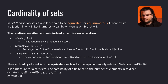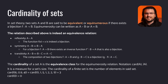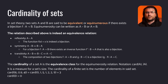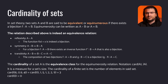Equinumerosity is usually denoted with a single tilde or a double tilde. This relation is an equivalence relation. Reflexivity holds because the identity function is a bijection. Symmetry holds because for every bijective function F from A to B, there exists its inverse from B to A that is also a bijection. Transitivity holds because for every two bijective functions F from A to B and G from B to C, their composition G after F from A to C is also a bijection.